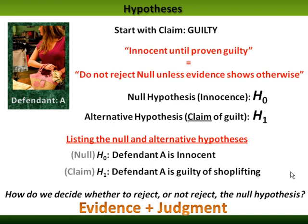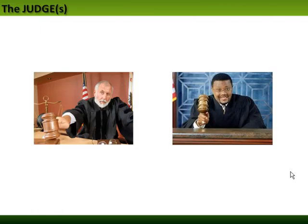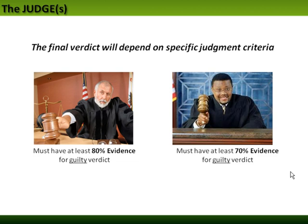What do we use? We use evidence plus judgment. Here is some potential evidence we could use in our hypothesis test: a prior criminal record, being caught in the act, witnessed by a third party, or recorded on security cameras. If you had all the evidence, it would be 100% evidence. If you had less, it would be some other percent — 75%, 50%, and so forth. The judges probably have different judgment criteria, and we decide on judgment criteria before we do the hypothesis test. One judge may say they need at least 80% evidence for a guilty verdict; another judge may say they need at least 70% evidence.